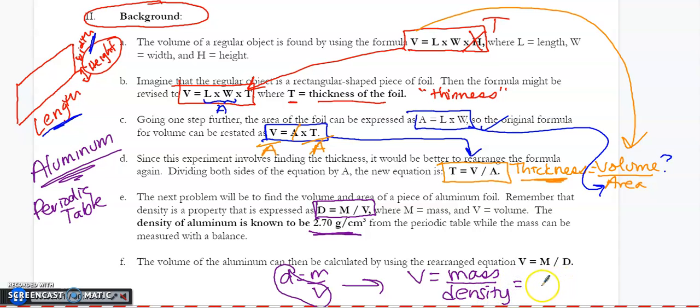Since density is known to be 2.70 grams per centimeter cubed, what I then can use is my scale to determine its mass. Then I can calculate the volume and plug it in. So I'm going to have to do a couple of different steps to solve this.